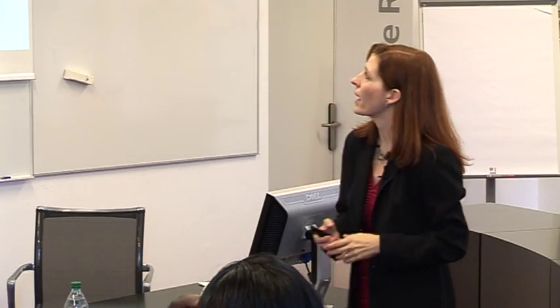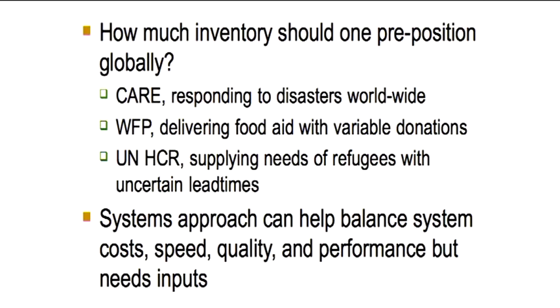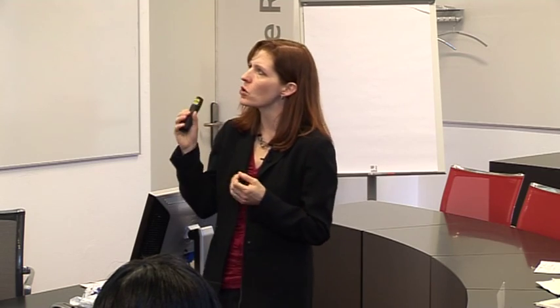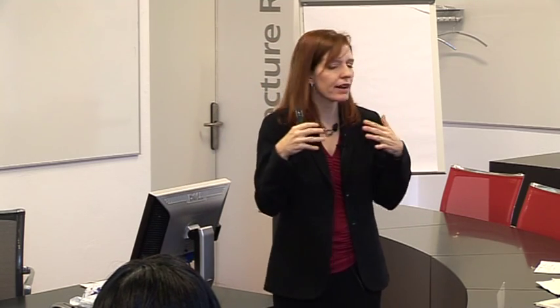Some organizations preposition inventory. Here are some examples of groups that talked to us at Georgia Tech about this. CARE was looking at prepositioning in preparation for responding to disasters worldwide. WFP was interested in delivering food aid and incorporating the fact that donations might come in at different times, and how they could use advanced donations to pre-purchase goods. UNHCR was interested in supplying the needs of refugees with uncertain lead times on the supply side. All of these organizations were looking at prepositioning, and if you're going to do that, you need to know how much demand you could have, where the demand will be, and when it will occur — all questions that forecasting can help us think about.